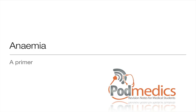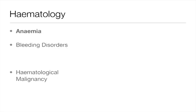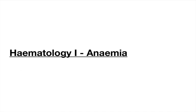Hello and a very warm welcome to this podcast all about anemia. This is the first of three podcasts in the haematology section. In haematology as a medical student, there are three big categories you need to know about: anemia, bleeding disorders, and haematological malignancy. These three podcasts will give you a good overview and framework for the rest of your learning. Let's get on with it and talk about anemia.